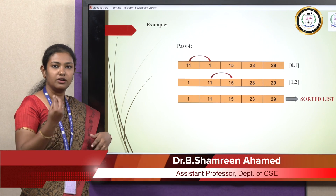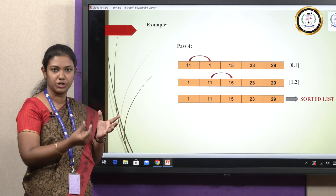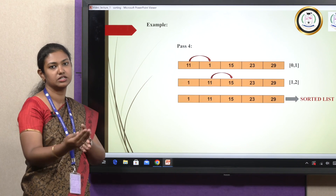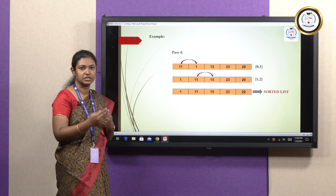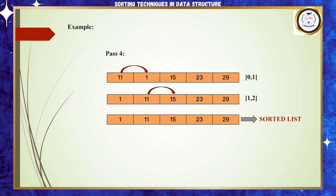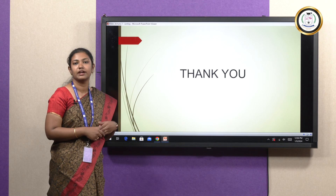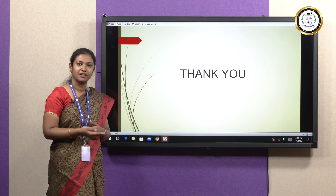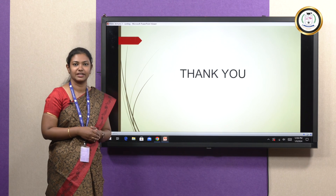A small recap: in bubble sort, you compare between two elements — the first element and the next consequent element — and keep traversing until you finally arrive at a sorted list. With this, my lecture on bubble sort comes to an end. In the upcoming lectures I will explain more about the other sorting techniques. Thank you.